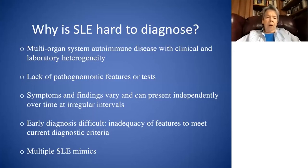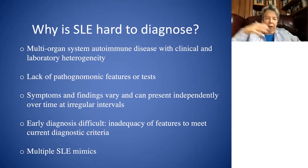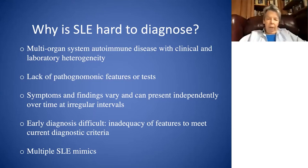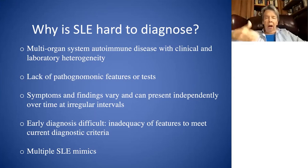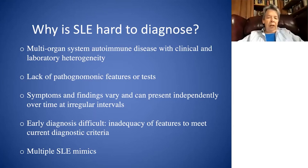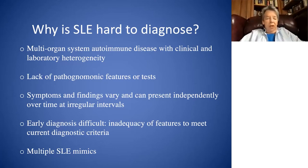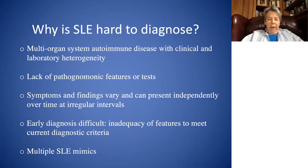So why is it hard to diagnose? It's a multi-organ system autoimmune disease with clinical and laboratory heterogeneity from patient to patient. There is a lack of pathognomonic features or tests for the most part. The symptoms and findings vary and can present independently over time at stuttering and irregular intervals when, frankly, you as a physician least expect it. Early diagnosis is difficult due to inadequacy of features to meet current diagnostic criteria — although that's improving. And finally, there are multiple mimics of lupus, so just when you think you have a patient with lupus, she turns out to have something different.